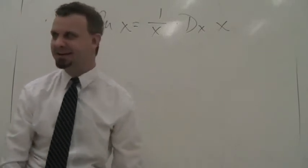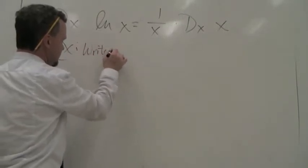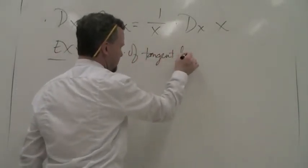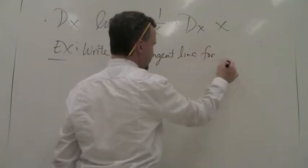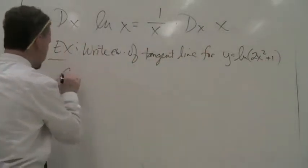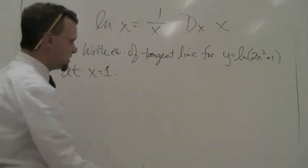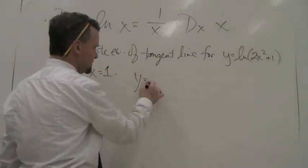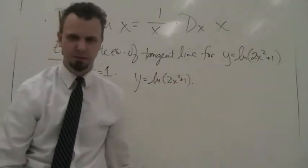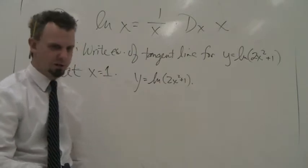First up, I want you to write the equation of the tangent line for y equals ln(2x² + 1) at the point x equals 1. To write the equation of the tangent line, you need two things: a point and a slope. To find the slope, you've got to find the derivative. So we're going to derive the natural log of 2x² + 1.